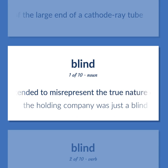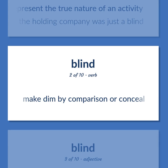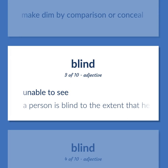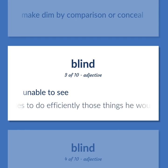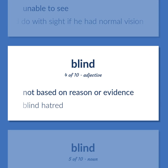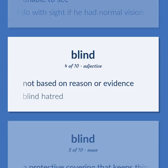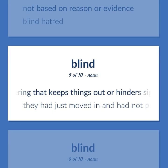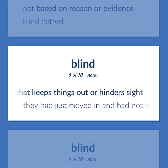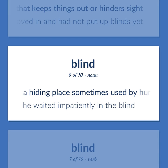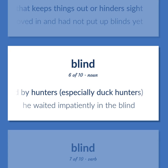Something intended to misrepresent the true nature of an activity. The holding company was just a blind. A person is blind to the extent that he must devise alternative techniques to do efficiently those things he would do with sight if he had normal vision. Not based on reason or evidence. Blind hatred. A protective covering that keeps things out or hinders sight. They had just moved in and had not put up blinds yet. A hiding place sometimes used by hunters, especially duck hunters. He waited impatiently in the blind.